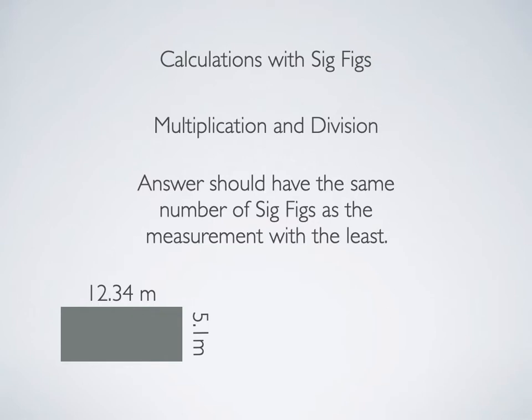Area is length times width. We have 12.34 meters times 5.1 meters. The answer should have the same number of significant figures as the measurement with the least. So addition and subtraction is looking at decimal place. Multiplication and division is looking at the total number of significant digits.